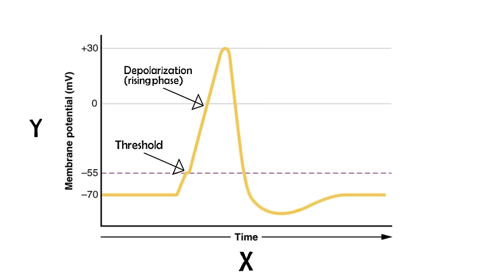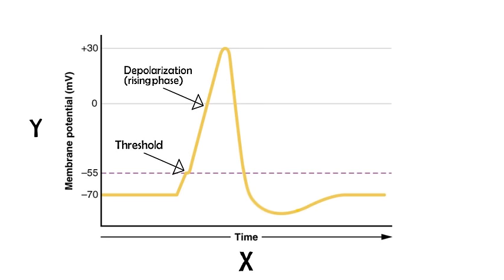The influx of positive ions creates the electrical signal known as the action potential, which then travels down the neuron.